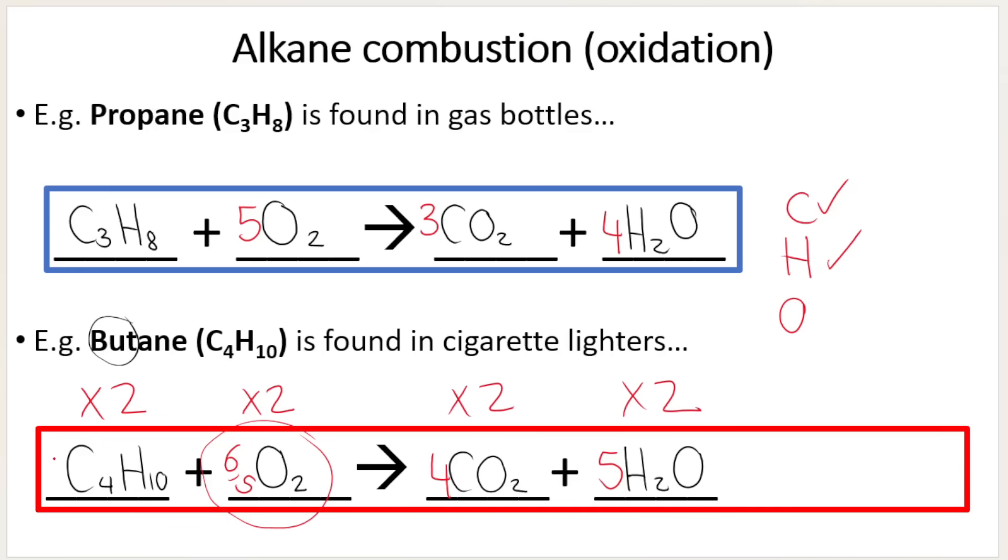That's just a rule. So there was an invisible 1 over here in front of butane. 1 times 2 is 2. Then we multiply the 6.5 by 2, we get 13. So 13 oxygens. Then we multiply the 4 by 2, we get 8 carbon dioxide. And then last but not least, we multiply the 5 by 2, and we get 10 H2Os.